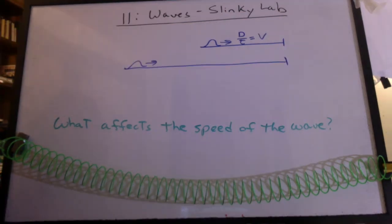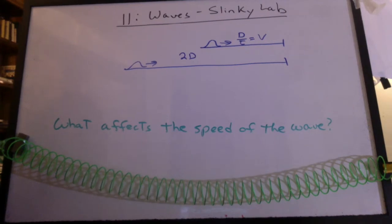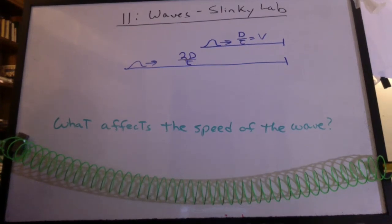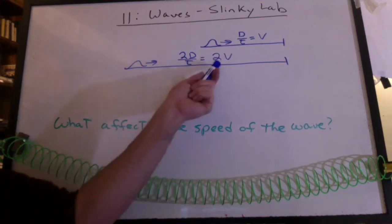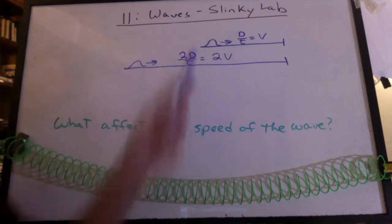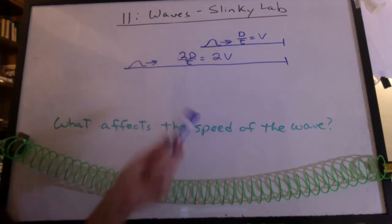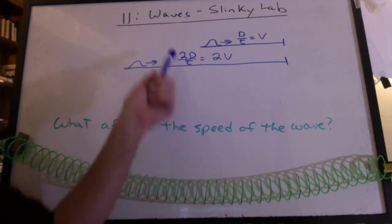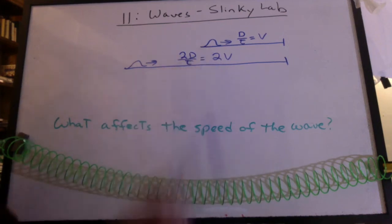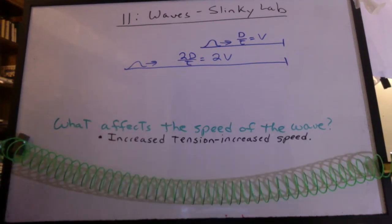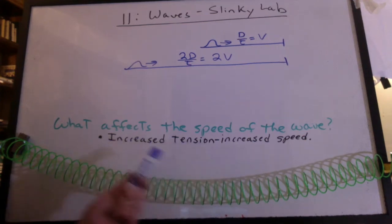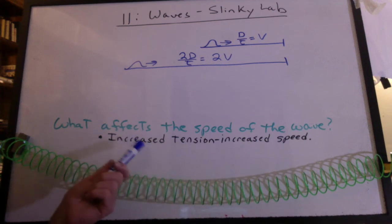Then we pulled the slinky back twice the distance, but got just about the same amount of time. This means the wave traveled twice as fast as before. Just because it traveled the same time, that's not the only part of the story. It's twice the distance. So by pulling the slinky tighter, we increase the speed. Increased tension, increased speed. In an upcoming lesson, we're going to explore this further. You should think about why this works this way.